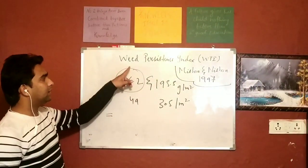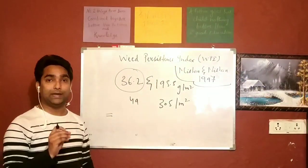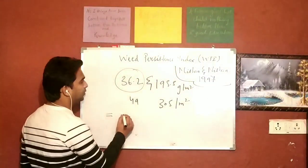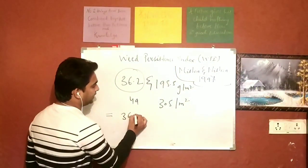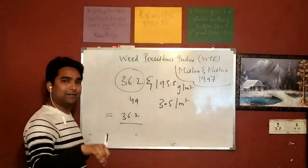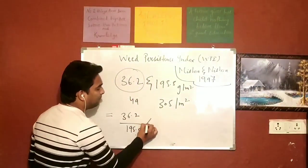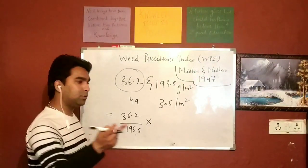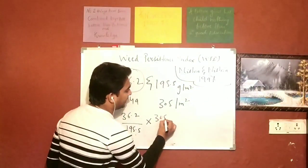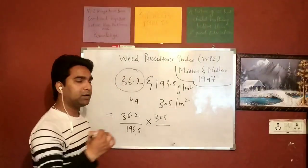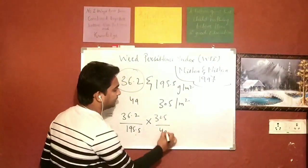So let's calculate it. As you know, the weed persistence index is the weed dry matter in the treated plot, which is 36.2, divided by weed dry matter in the control plot, which is 195.5, multiplied by weed population in the control plot, which is 305, divided by weed population in the treated plot, which is 49.